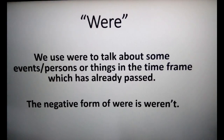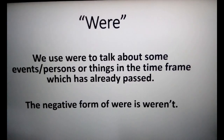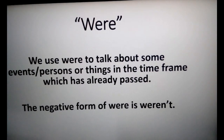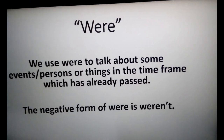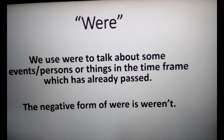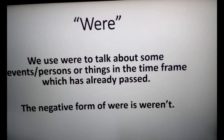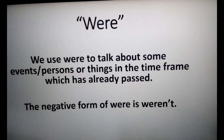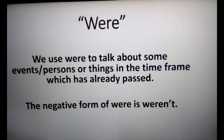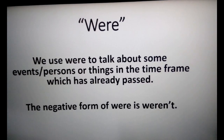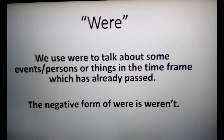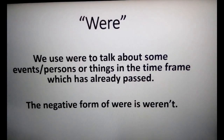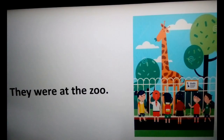We use 'were' to talk about some events, persons, or things in a time frame that has already passed. The negative form of 'were' is 'weren't' — 'weren't' is the contraction of 'were not'. Example: 'There were animals at the zoo.'